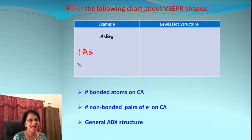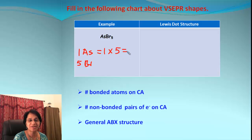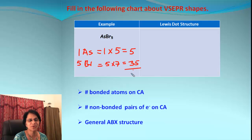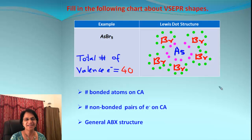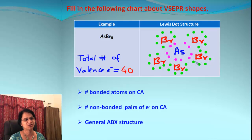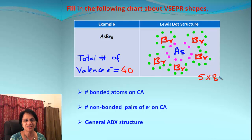Moving on: the next molecule is AsBr₅. We have one arsenic atom and five bromine atoms. Arsenic belongs to group 15, bringing 5 electrons. Each bromine brings 7 valence electrons, making 35 from bromine. Total: 40 valence electrons. The Lewis dot structure has arsenic as the central atom with all bromines around it. Five bromine atoms each with an octet: five times eight equals 40 electrons used.